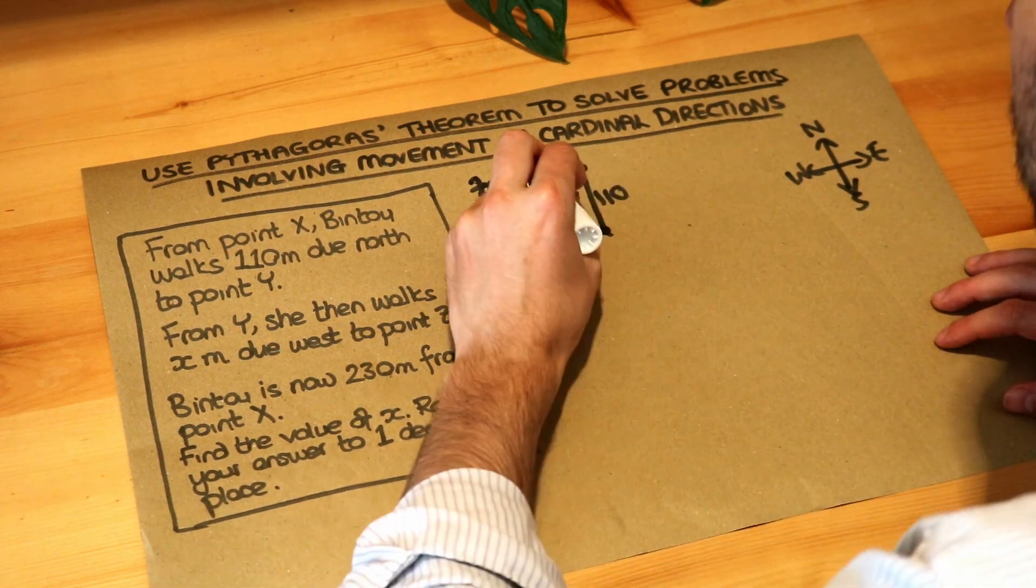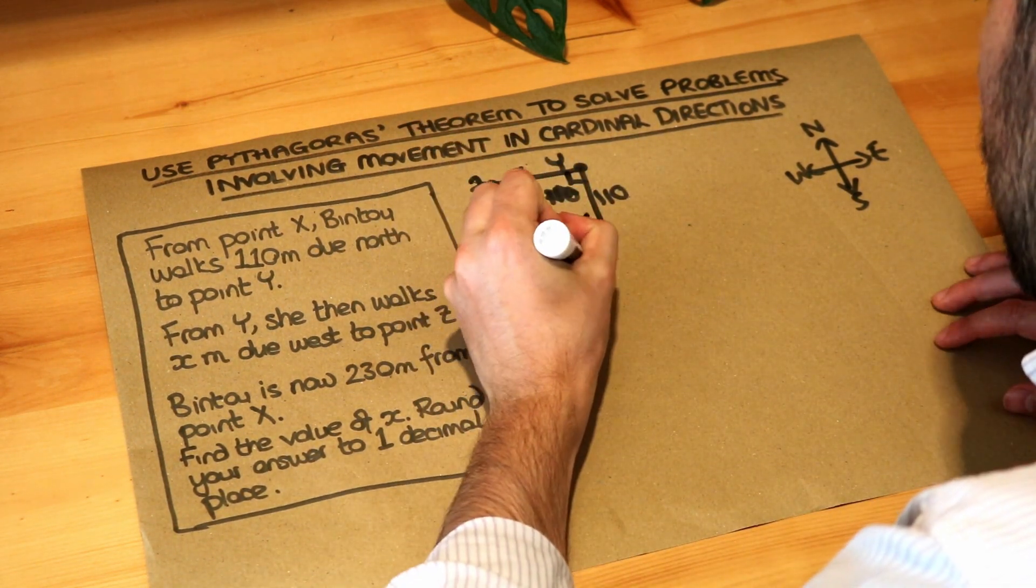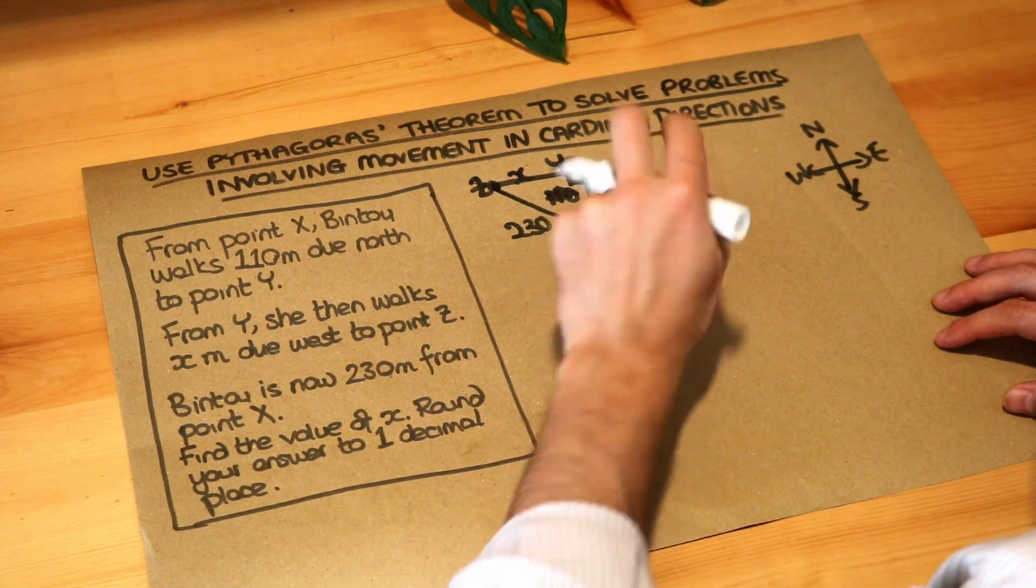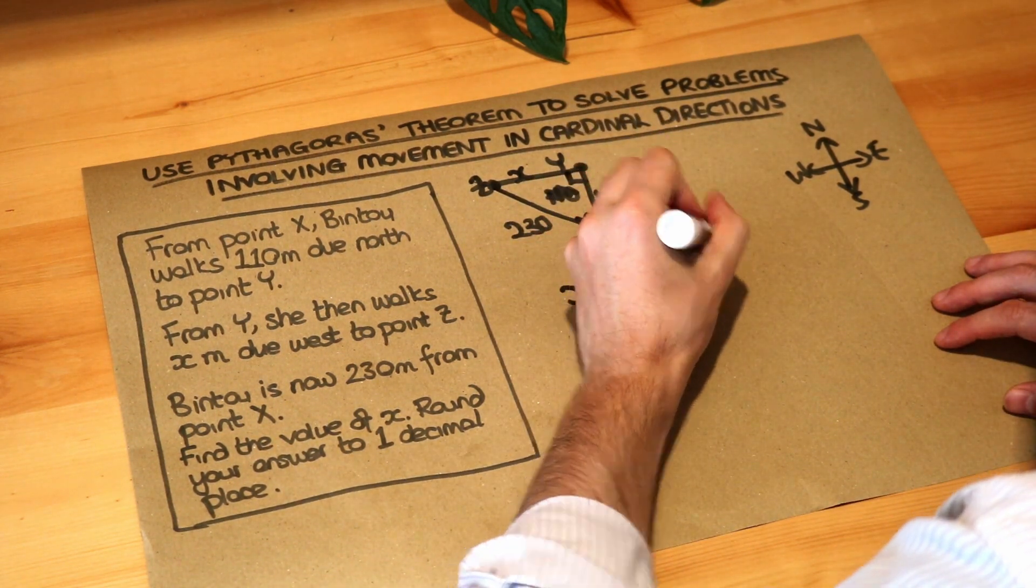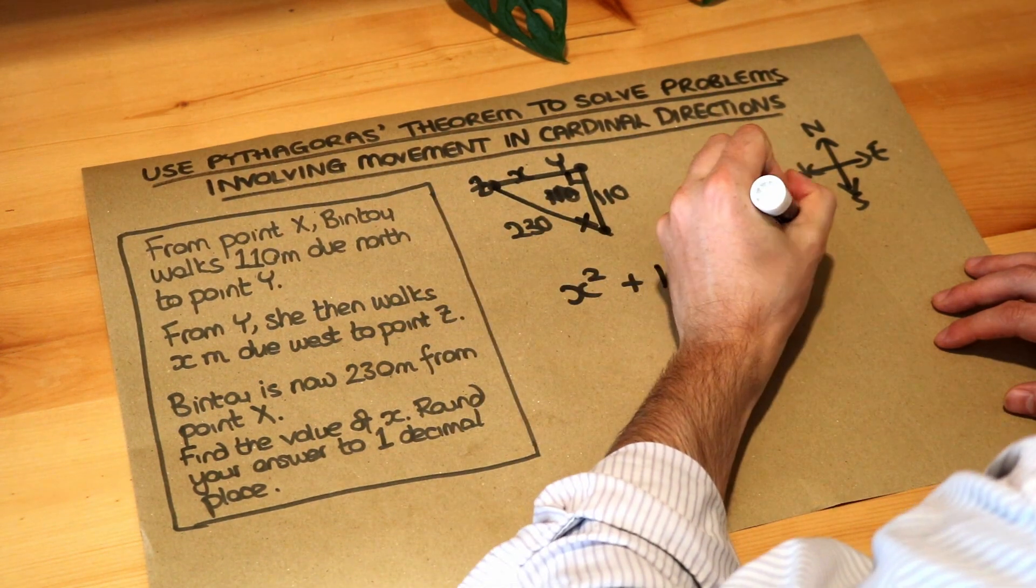Remember Pythagoras theorem: you just do one of the shorter lengths squared plus the other shorter length squared equals the hypotenuse, the longest length squared.